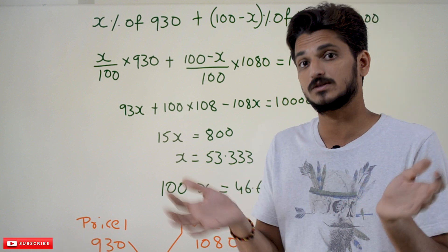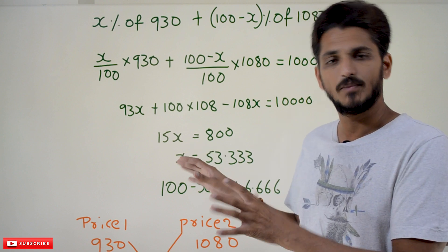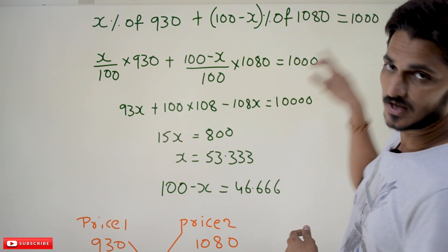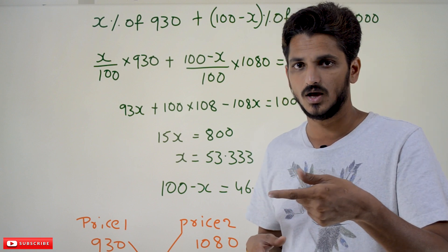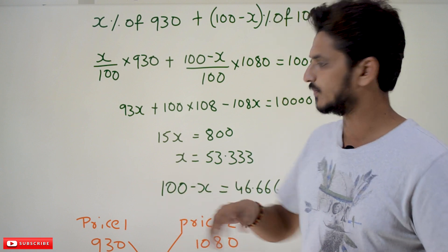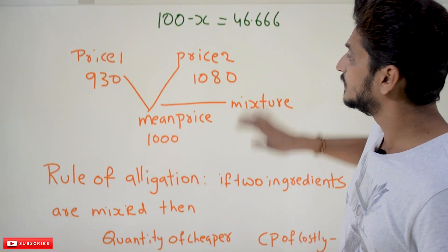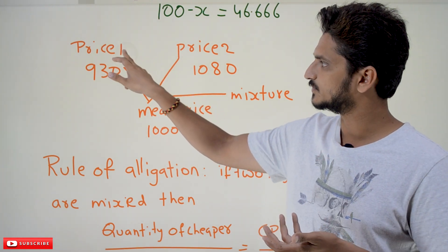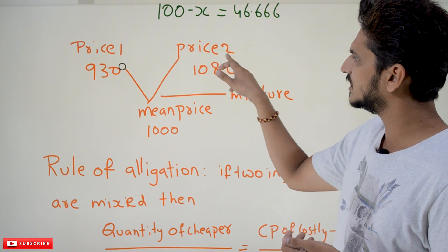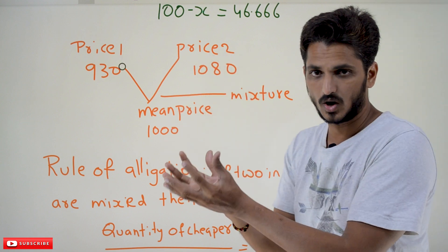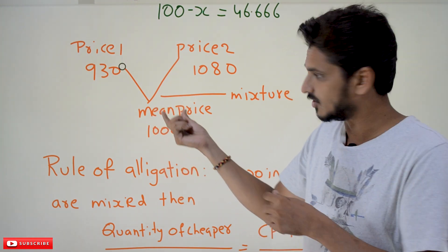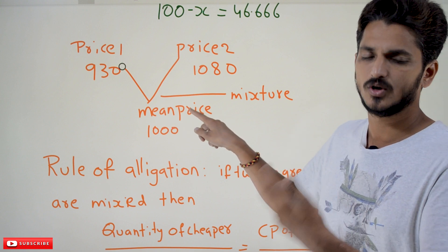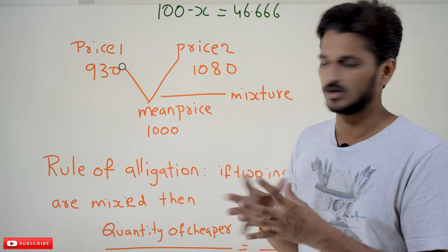From the percentage point of view that is the concept, but we can identify the ratio at which these two items must be mixed to get a desired cost of ₹1000 very easily using the allegation rule. Before going into the rule, let's establish the terminology: Price 1 (the first ingredient cost) = ₹930, Price 2 (the second ingredient cost) = ₹1080, and the mixture cost is called the mean price, which is ₹1000.